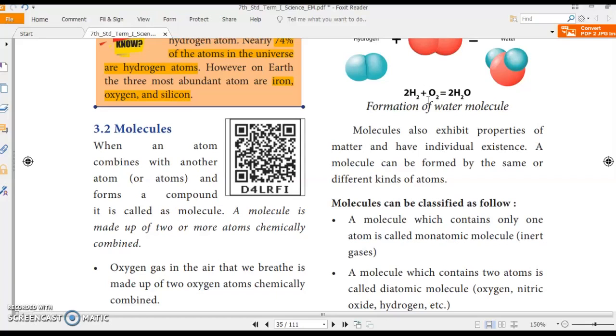So why can't we write it as H2 plus O gives H2O? Because oxygen is not stable as a single atom. Rather, it is stable as a molecule. So in your textbook, the definition of molecules is given like this: When an atom combines with another atom or atoms and forms a compound, it is called as molecule. A molecule is made up of two or more atoms which are chemically combined.